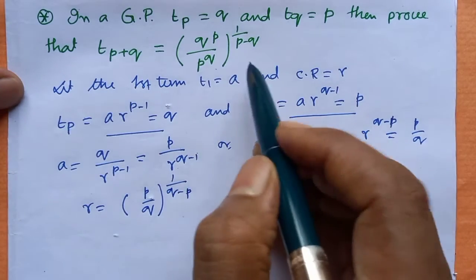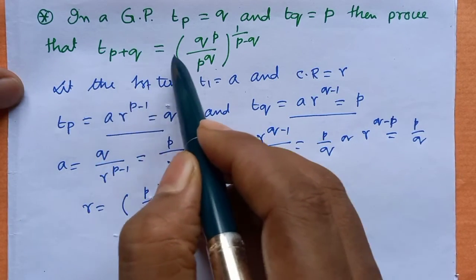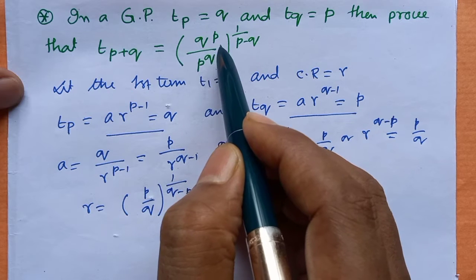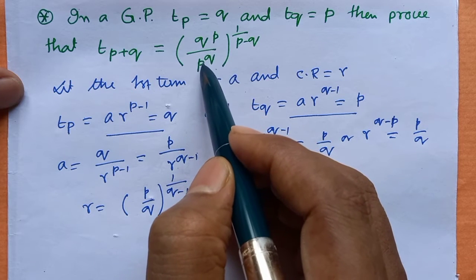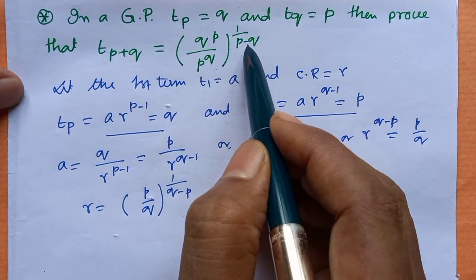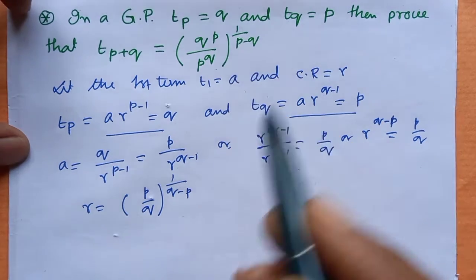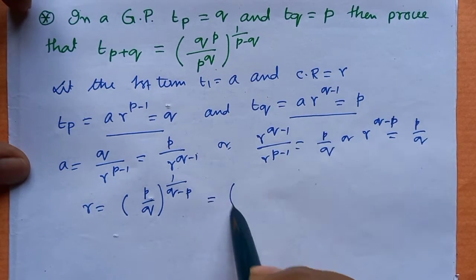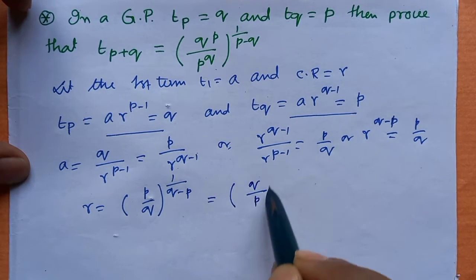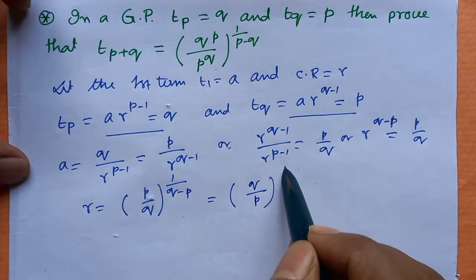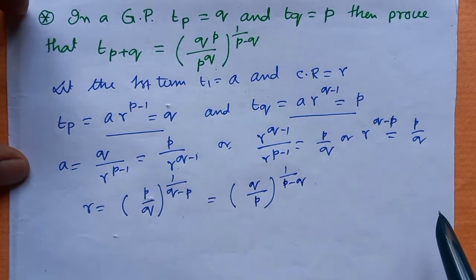We note that we have to prove t(p+q) equals [q to the power p divided by p to the power q] whole to the power (1 by p minus q). This can be rewritten as (q by p) whole to the power 1 divided by (p minus q).